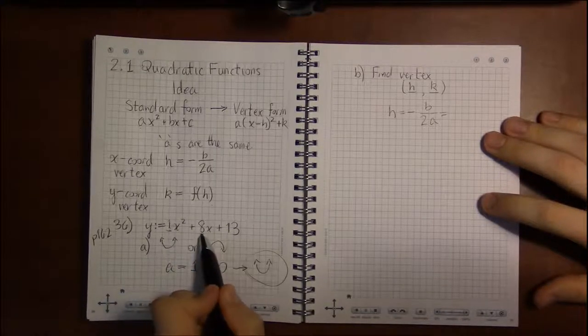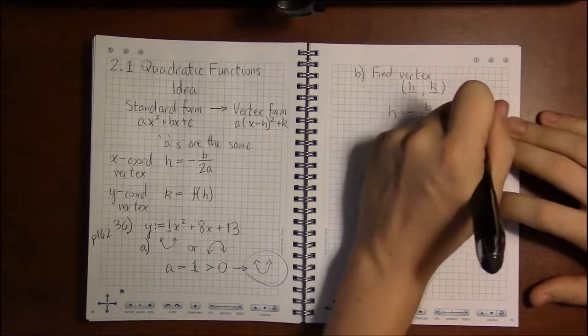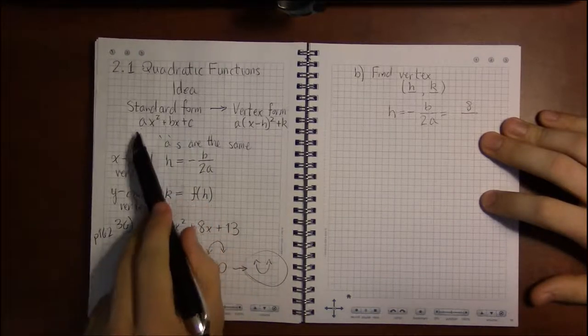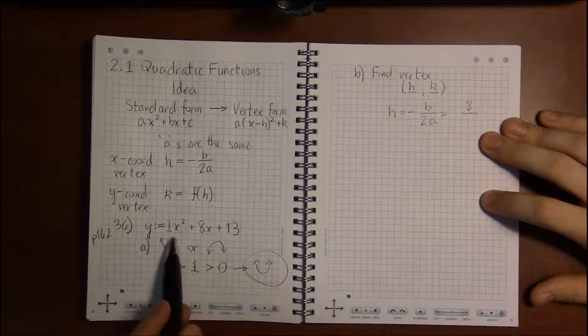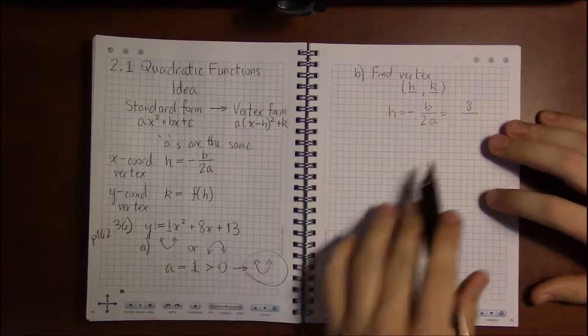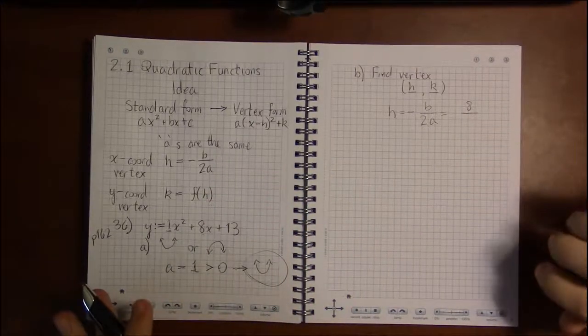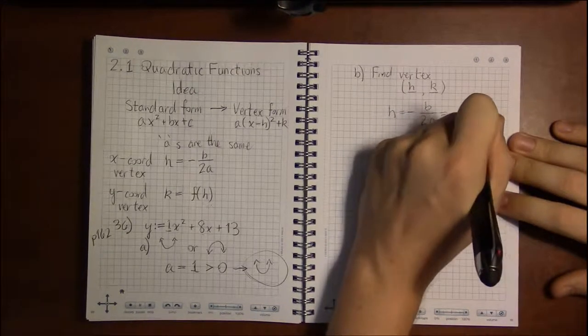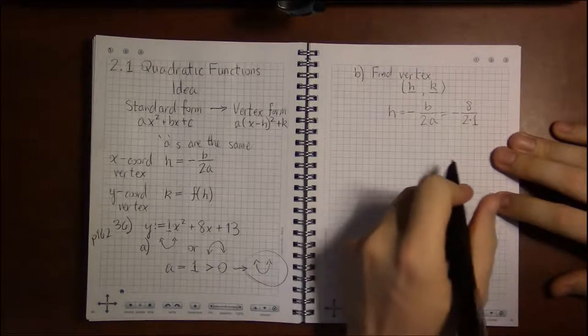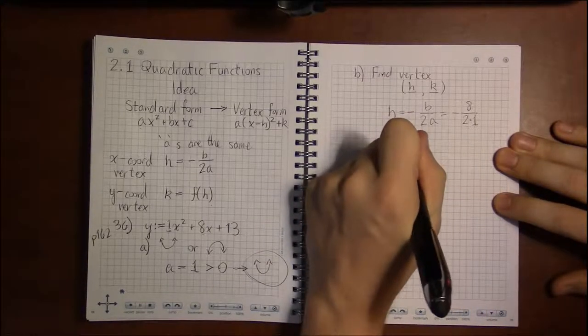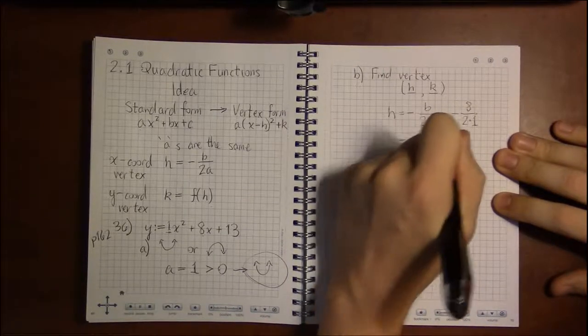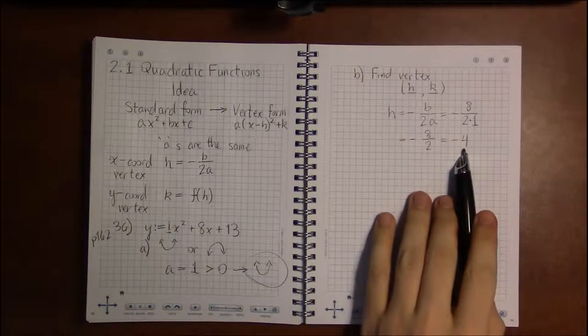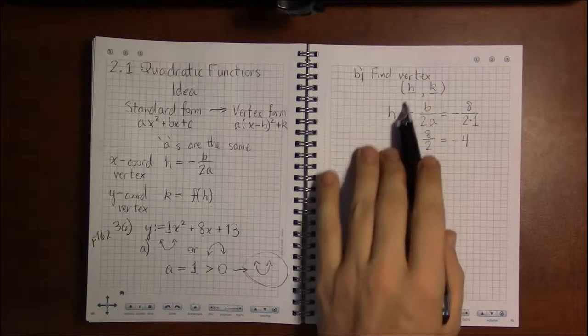And looking over here, we said that h was minus b over 2 times a. And looking back at our original formula for 36, b is 8. B is the number that multiplies x. Don't include any x's with these. A, B, and C should just be numbers. There should not be any x's. A should not be 1x squared. B should not be 8x. A, B, and C should all be just numbers. They shouldn't have anything to do with x. And a we already saw before is equal to 1. So 2 times 1 is 2. And 8 over 2 is 4. So the x coordinate of the vertex is minus 4. Our first number here is minus 4.